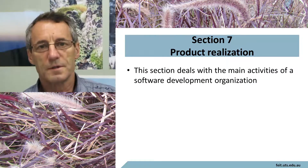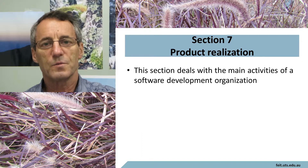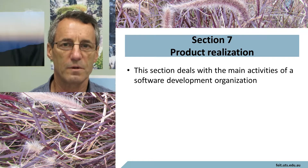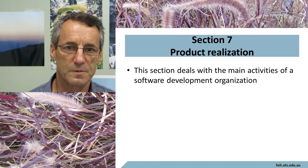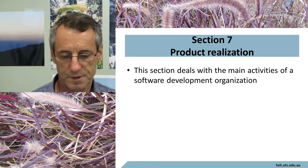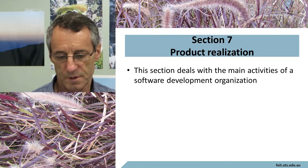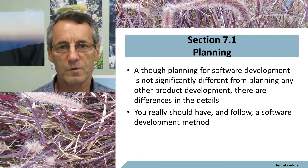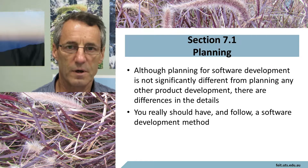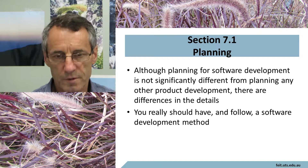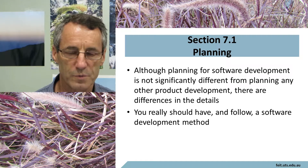Section 7 of ISO 9001 is where the rubber hits the road. This is where a whole lot of production and development happens — this is the product realization side of things. Starting with section 7.1, which talks about planning of product realization, it essentially says that you have to have the processes — you have to plan the processes that are going to realize your product.